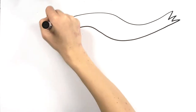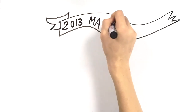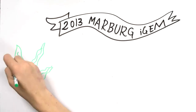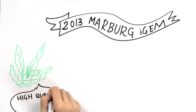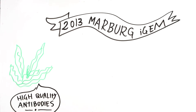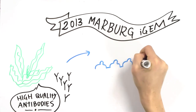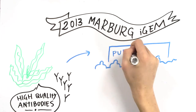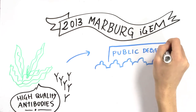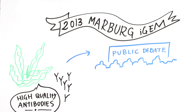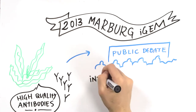For example, the 2013 Marburg iGEM team's project involved the production of high-quality antibodies using algae. As a part of their project, they organized a debate to discuss the aims and origins of synthetic biology and also the reasonable and expected depth of support for this project.